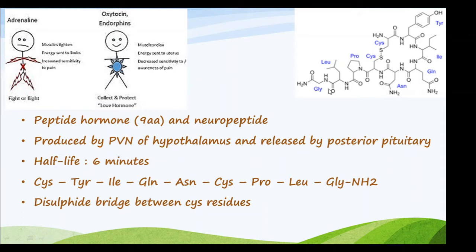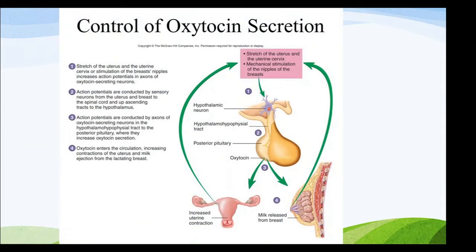Oxytocin secretion from the pituitary: it is produced by the hypothalamic neuron, released into the hypothalamo-hypophysial tract, enters the posterior pituitary, and is released from there. Once released, it can affect uterine contraction and lactation from the breast tissues.